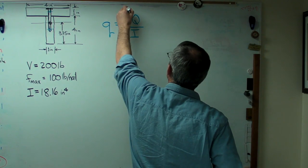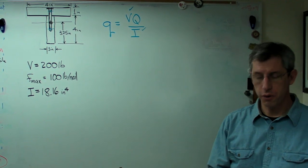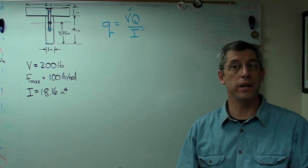So we already know V. We already know I. Then there's this Q. Q is the first moment of area. It's an area times a distance.